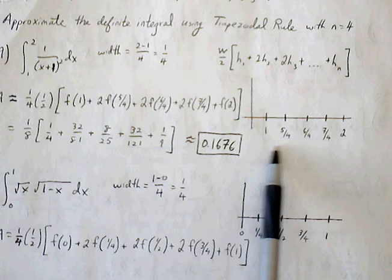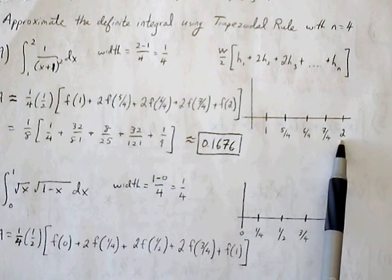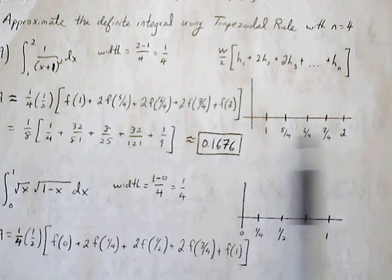So 1 plus 1 fourth is 5 fourths, plus 1 fourth is 6 fourths, plus 1 fourth, plus 1 fourth is 2. So these are the values we'll be using. Plug into our formula.